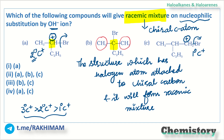Looking at option C, yes, there is a chiral carbon atom present, but the nucleophilic substitution will occur at the carbon where the halide group is attached. The carbocation formed there is a 1° carbocation, whereas in option A it is a 2° carbocation. So I will mark option A as the correct answer to this question.